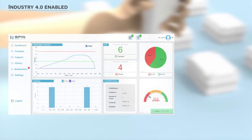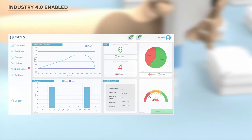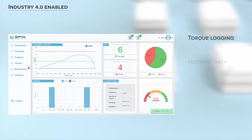Visualize and check your production quality online with access to real-time data such as torque logging, historic data, cycle time, and more. No more missing screws and returned batches.